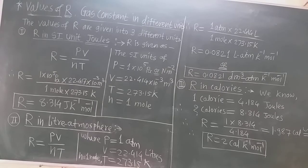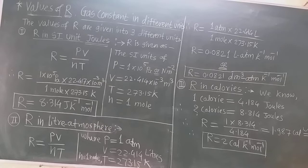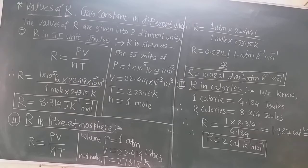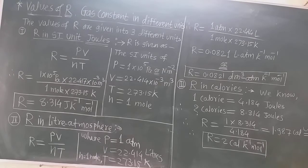Now let us learn today the different values of R and how they are calculated. R is the gas constant, which is the constant of the ideal gas equation or general gas equation. There are three different values of this gas constant R. In SI units it is expressed in joules, it is also expressed in liter-atmosphere, and it is also expressed in calories. When we solve the numericals, the different variable values given in the ideal gas equation — such as pressure, volume, temperature, number of moles — determine the unit of the gas constant.